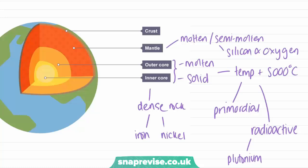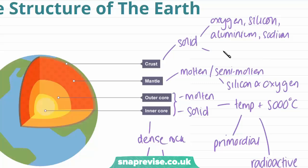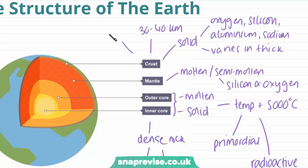Finally, we have our crust, which is the lightest part of the structure because of the elements it contains. The crust is solid, because this is the part of the Earth that we actually live on. It contains many elements, which include oxygen, silicon, aluminium, and sodium, among others. It varies in thickness because of things like mountains and oceans. Where we have continents, the crust can be about 30 to 40 kilometers deep, and in the oceans, the crust is only about 6 to 10 kilometers deep.